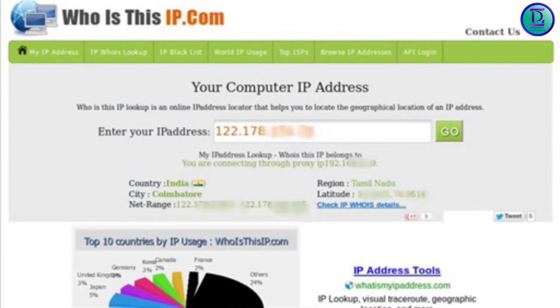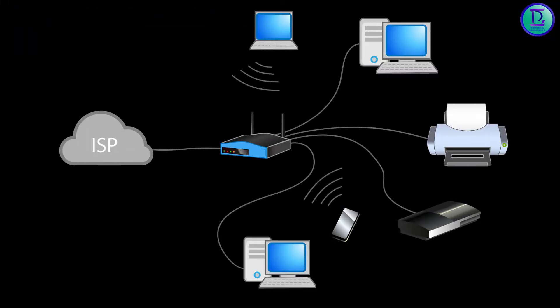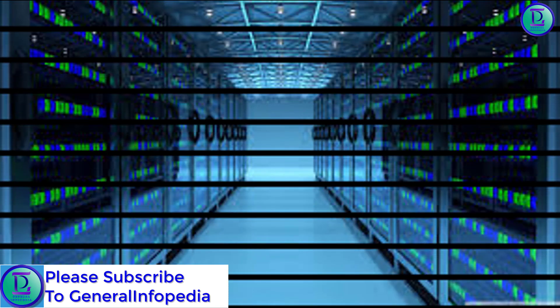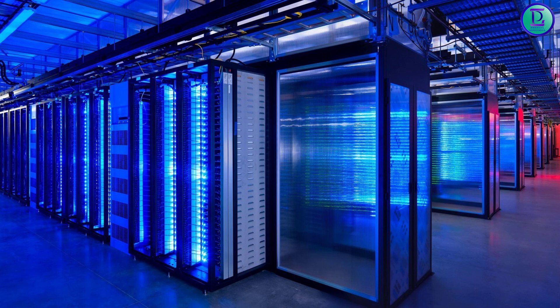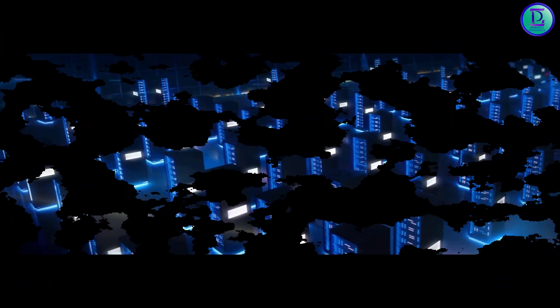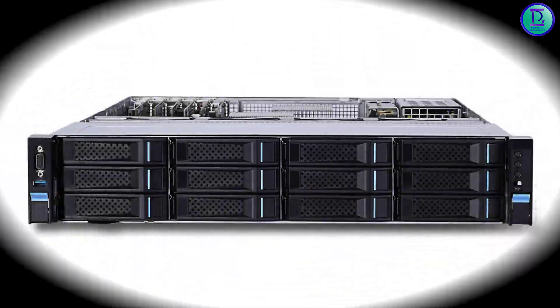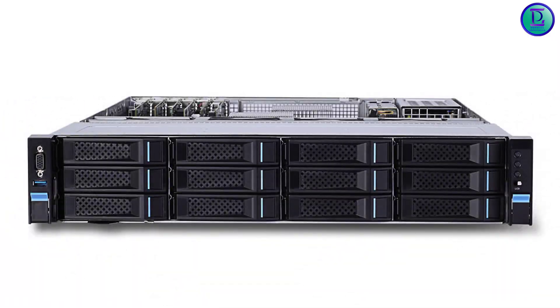Step 3: The internet service provider then sends the URL requested to an external DNS server, which is either hosted by them or by whoever provides their internet access. Step 4: The external DNS server then matches the URL up with the external IP address assigned to the LAN hosting that website, and the request is then sent on to that network. Step 5: The network hosting that website accepts the request and then sends it to its own internal DNS server.